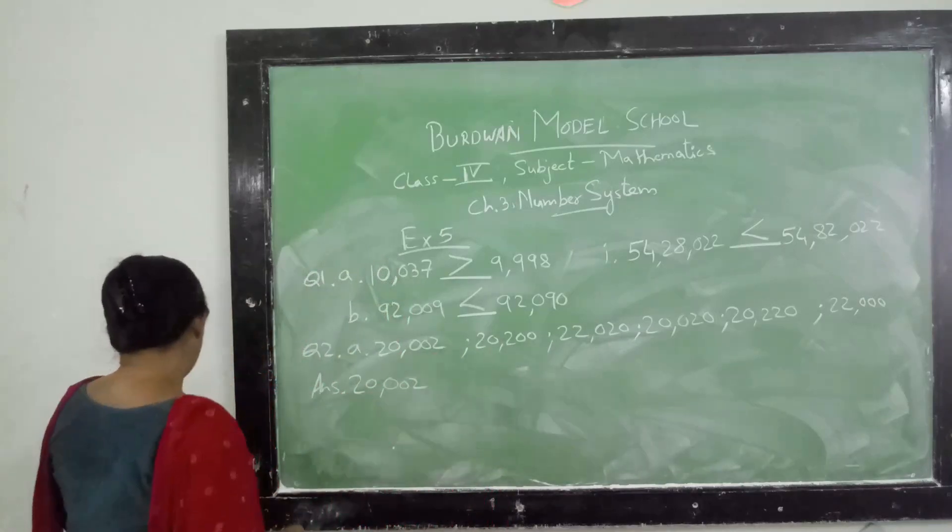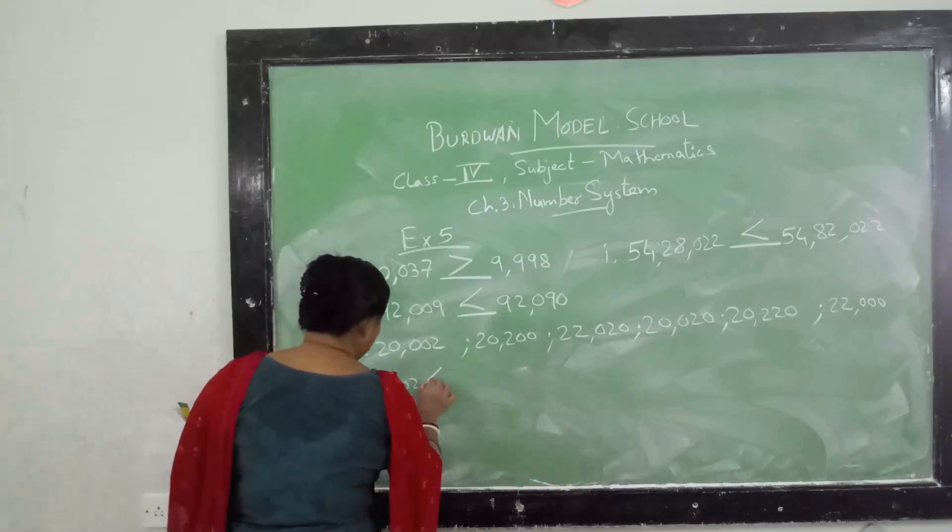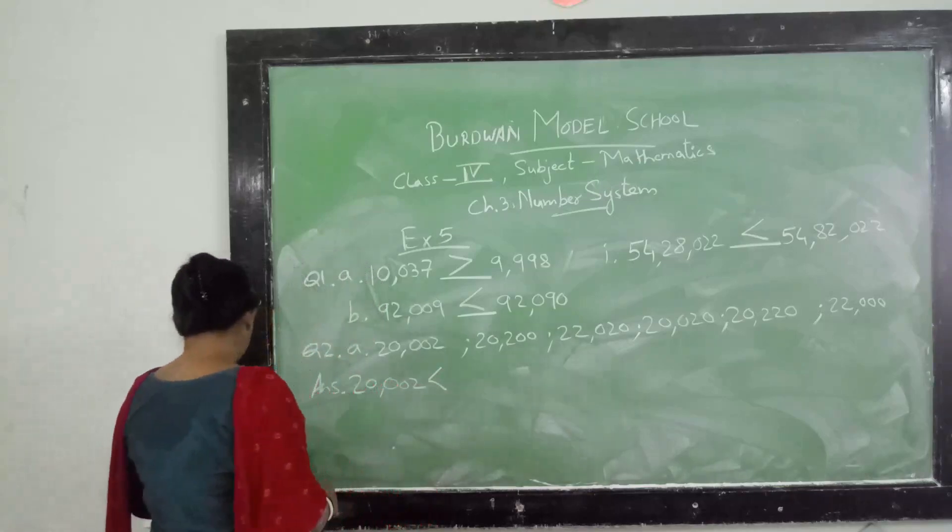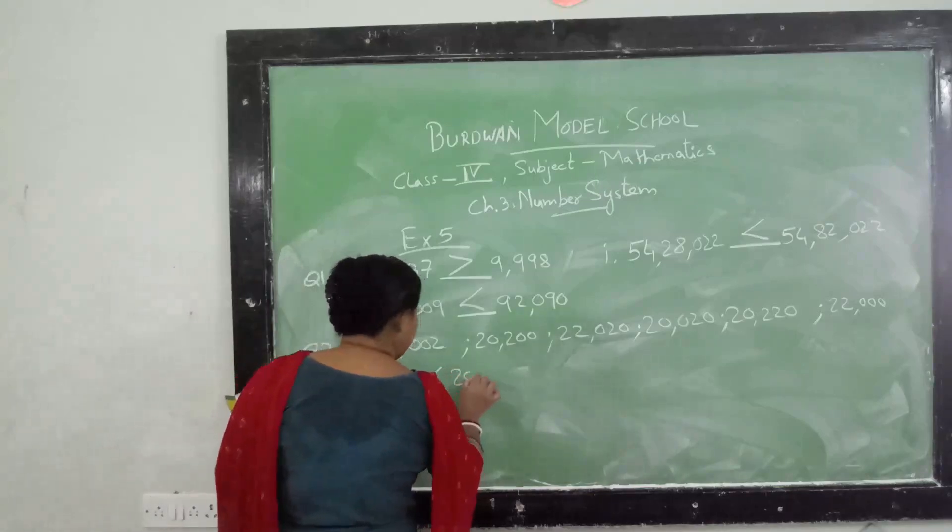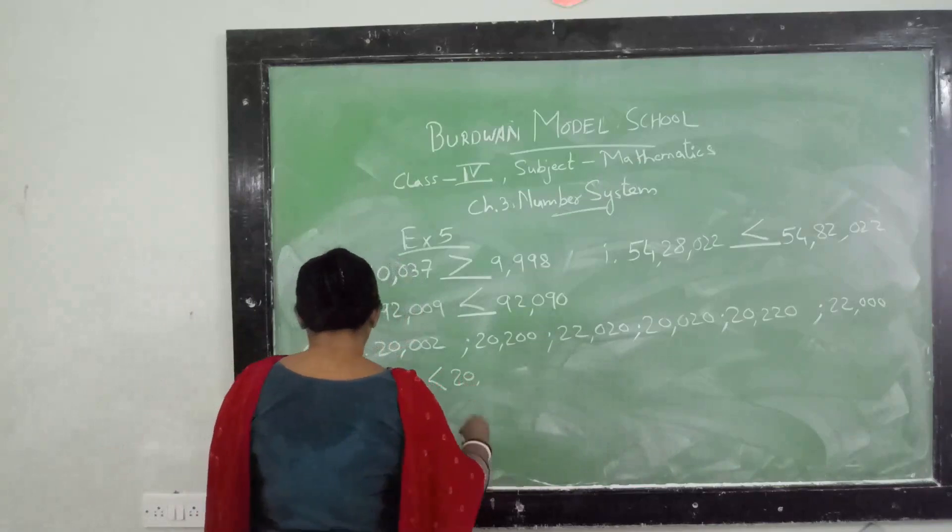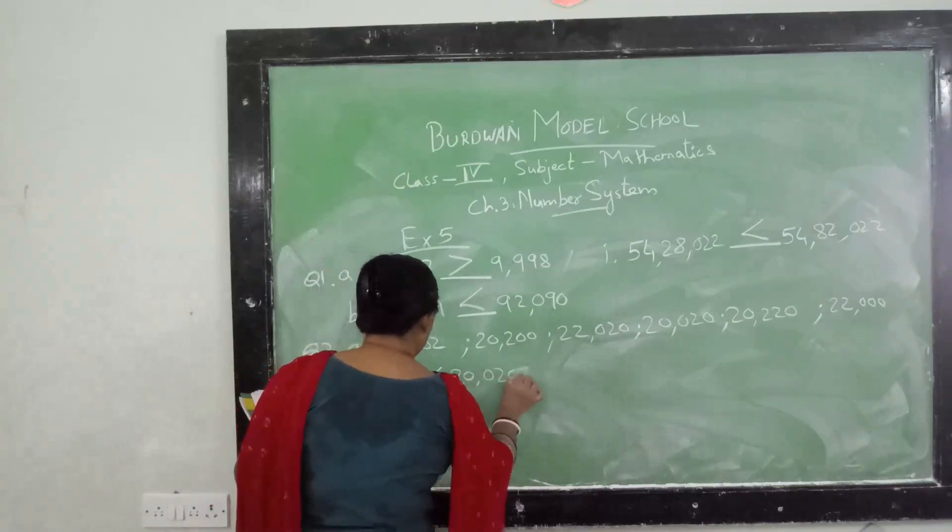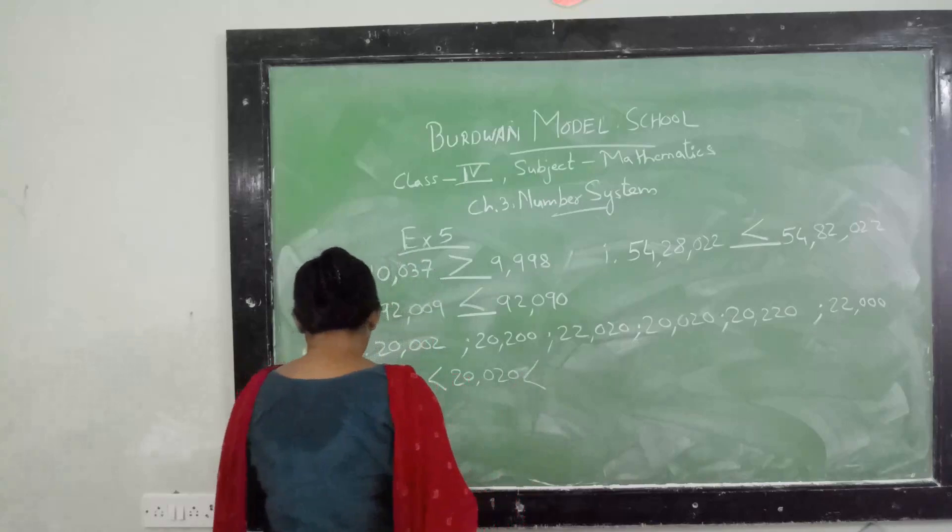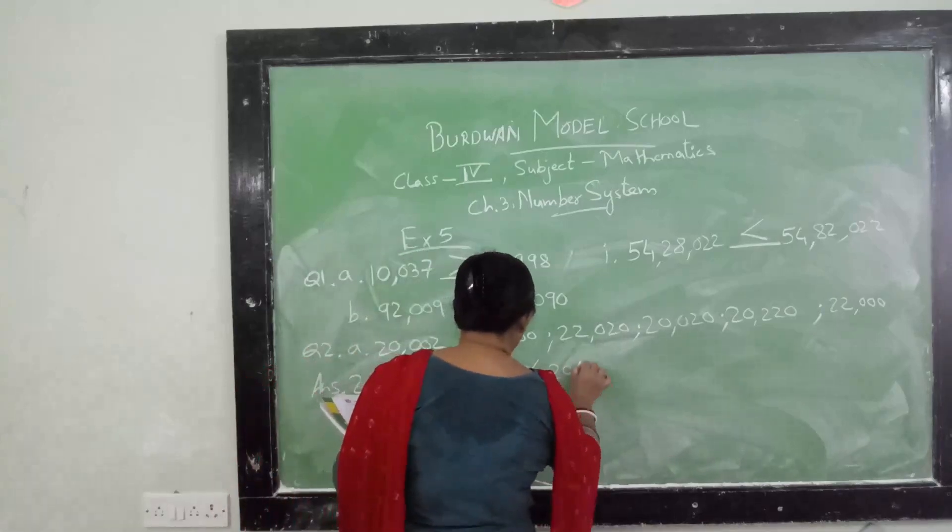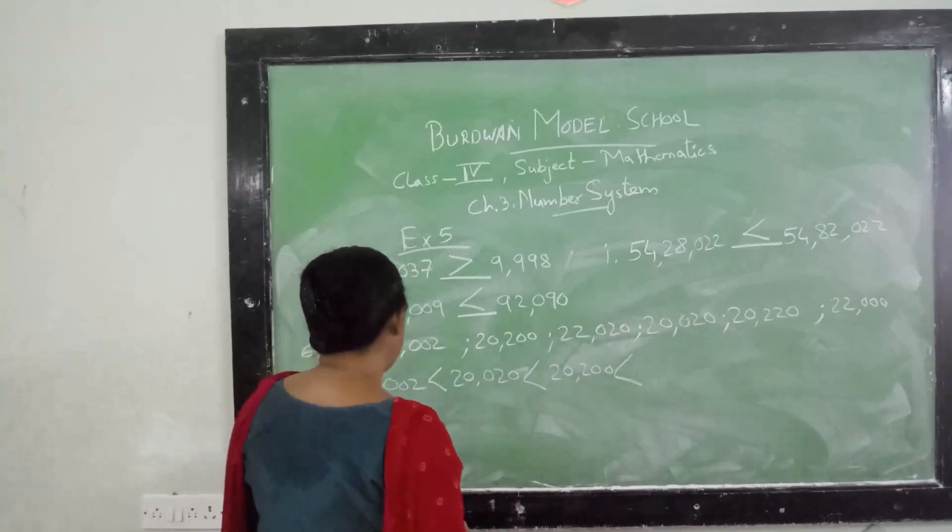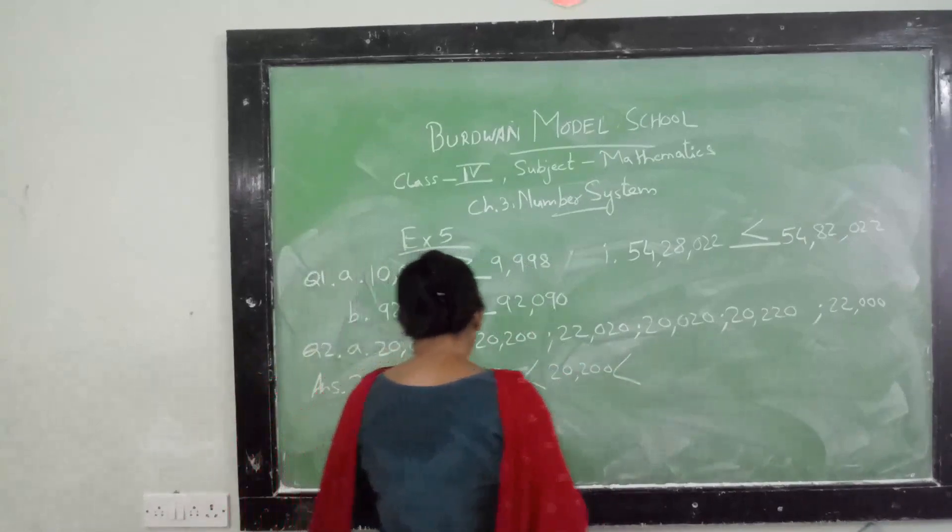And then give the symbol, that is less than, less than 20,020, again less than 20,200. This is all about 20. Now we will come to 22.